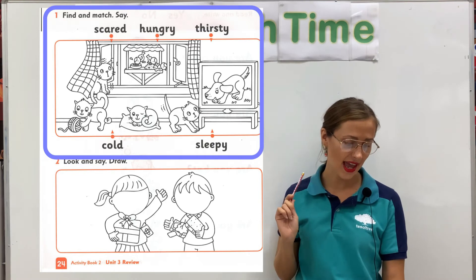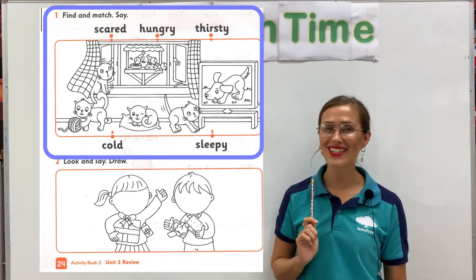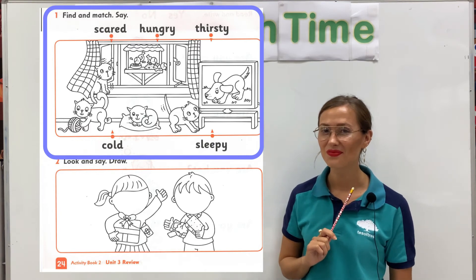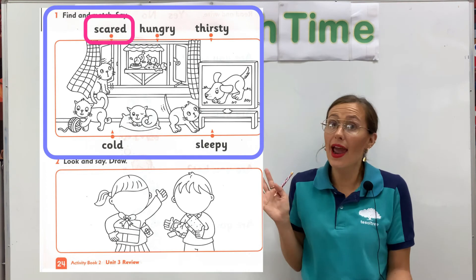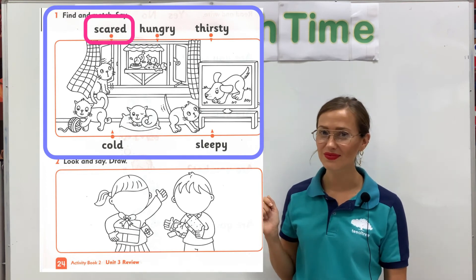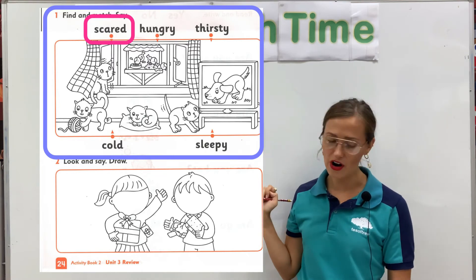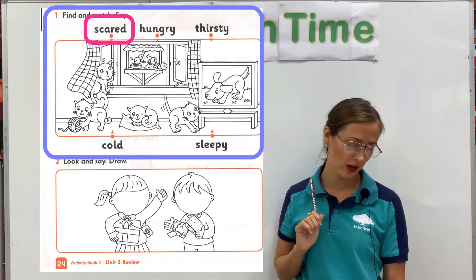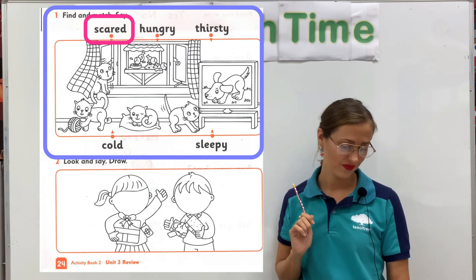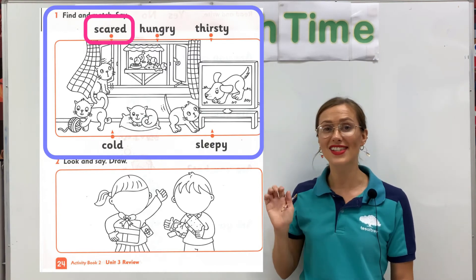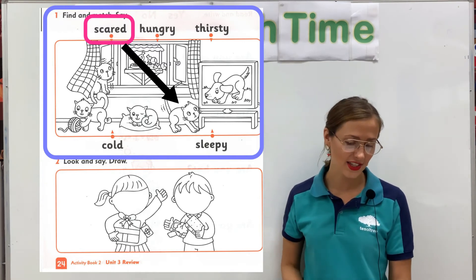I see cats, I see birds, and I see a dog. Okay, now who is scared? Make a line from the correct animal to the word. I see a cat — he is scared.